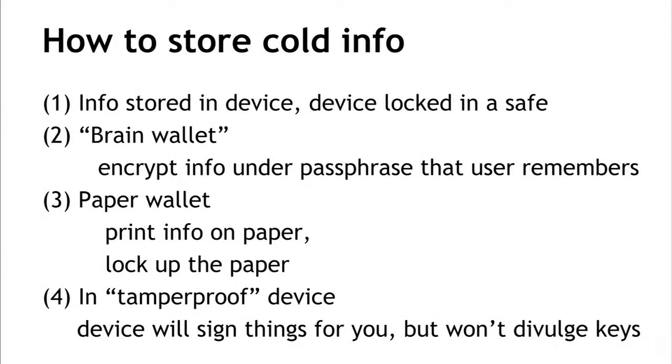The fourth way to store offline information is to put it in some kind of tamper-proof device. Either we put the key into the device, or the device generates the key, and the device is designed so that there's no way it will output or divulge the key. The device might sign a statement with the key when you press a button or give it a password, but it's designed so that it doesn't give out the key. The advantage is that if we lose the device or if it's stolen, we'll know it — unlike the theft of key information, where we might not know someone learned our key. In general, people may use a combination of all four methods to secure their keys.